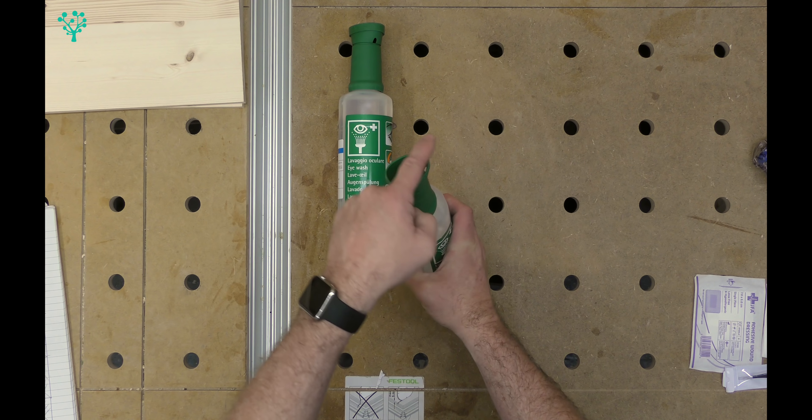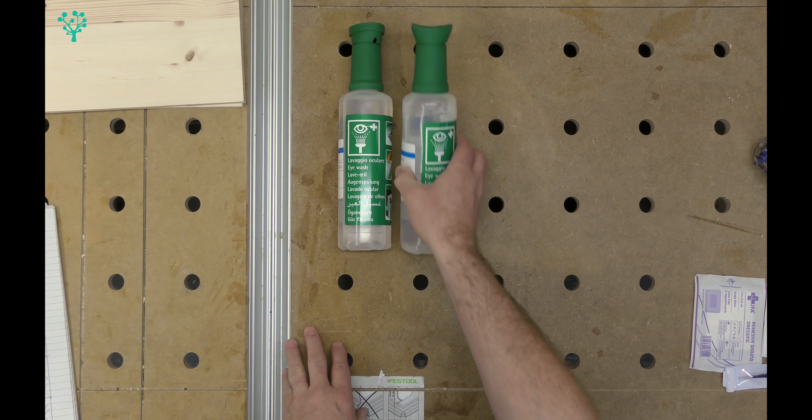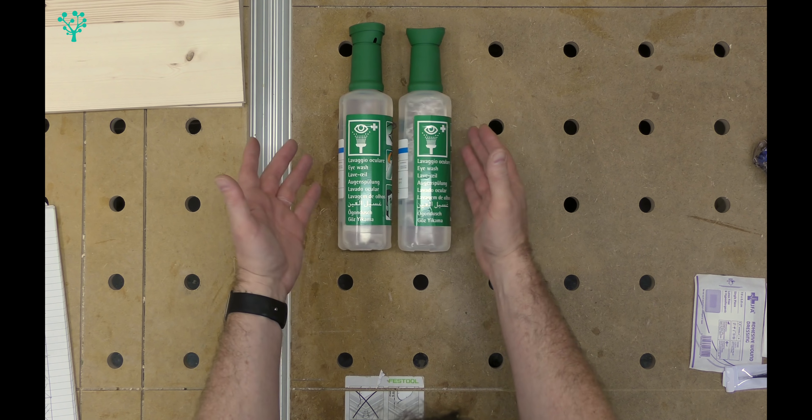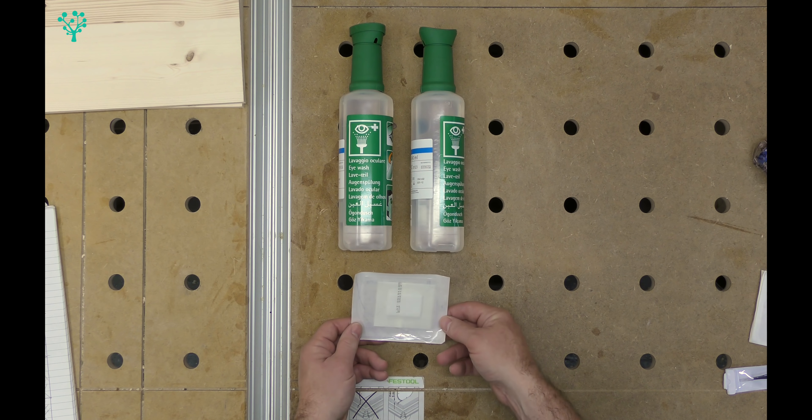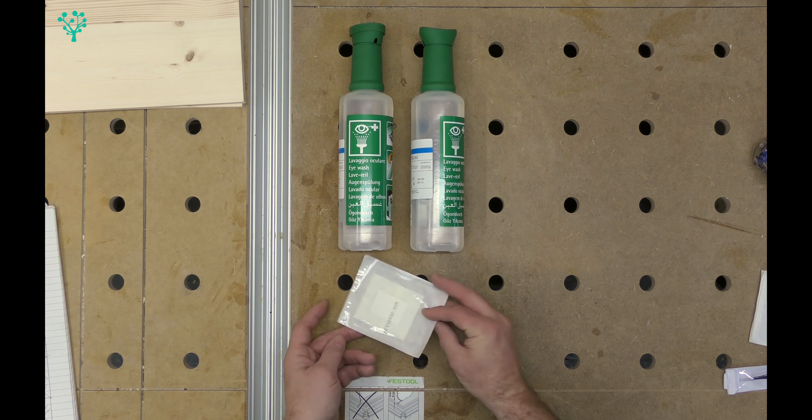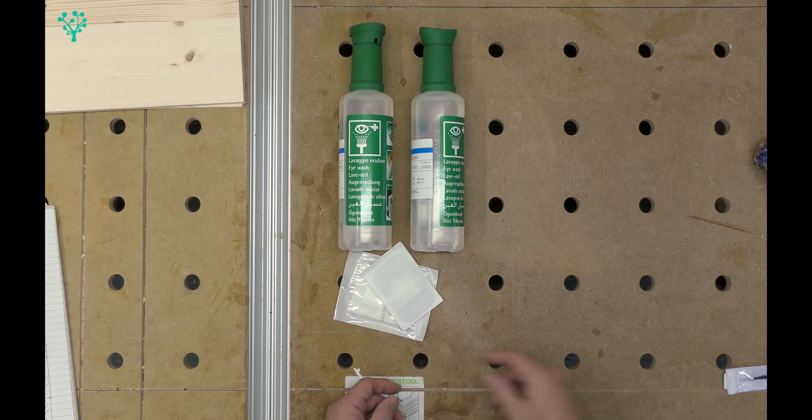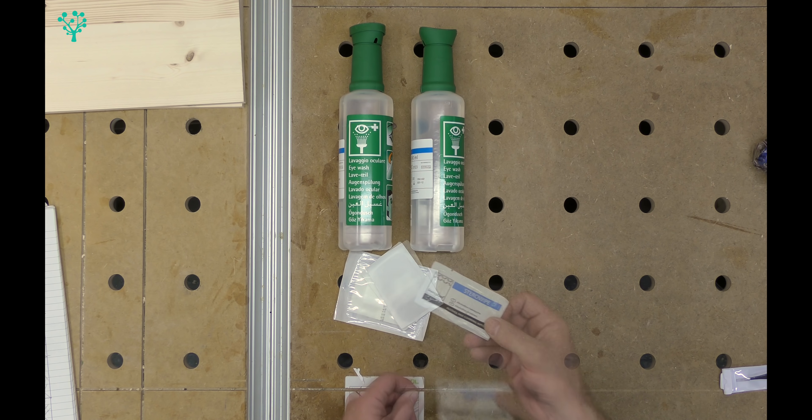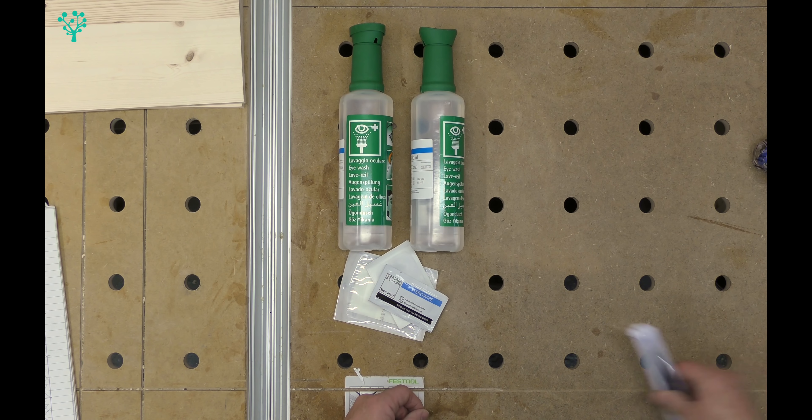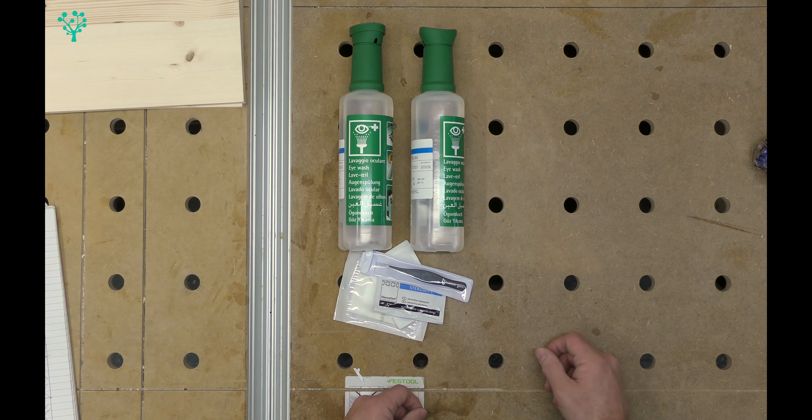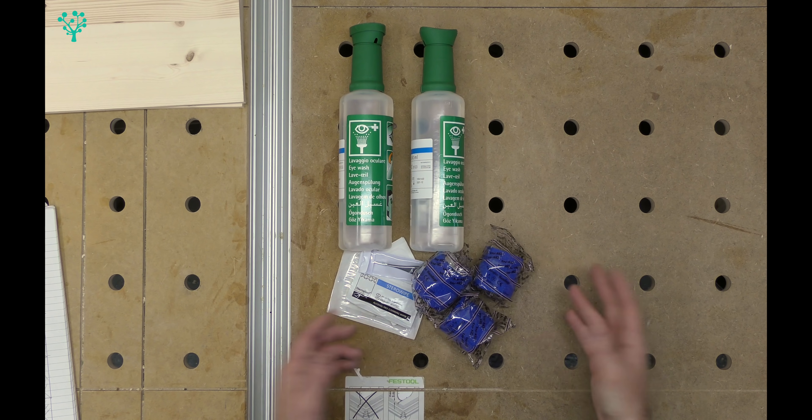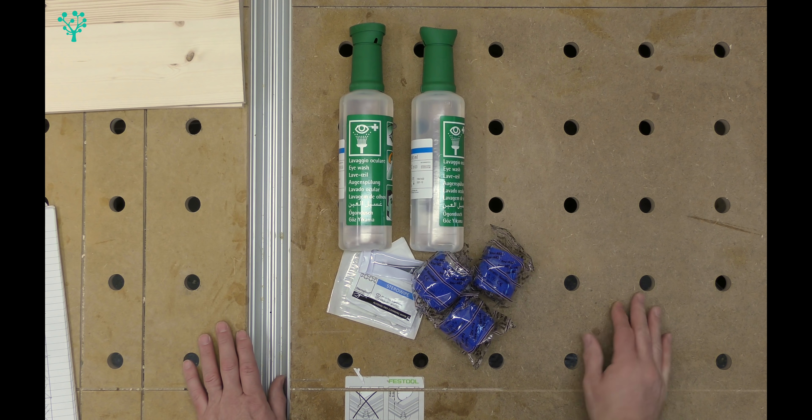I favor these eyewash bottles with the eye cup on top. That makes it very easy to rinse and treat your eye when you're by yourself in the workshop. I want to have a number of adhesive wound dressings for larger problems, a whole variety of plasters of shapes and sizes, some medical wipes and a pair of tweezers for splinters. I also want a number of bandages just in case I need to treat anything more severe that will require secondary aid.